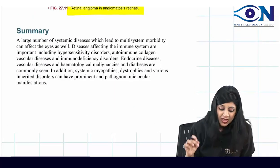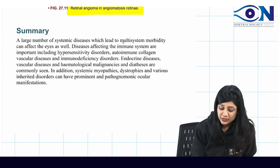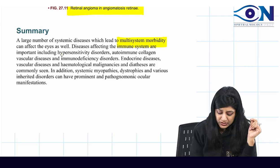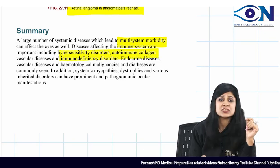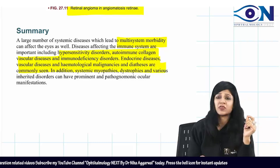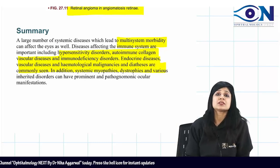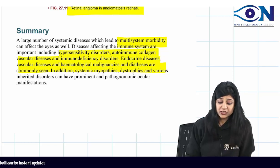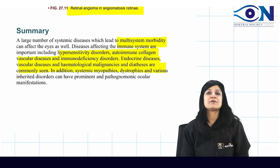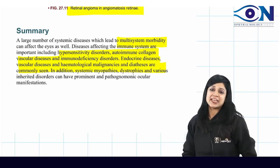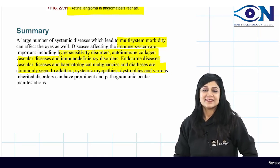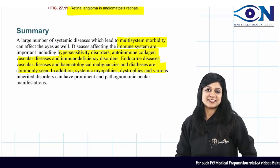Summary: A large number of systemic diseases lead to multisystem morbidity. Diseases affecting the immune system are important — including hypersensitivity reactions, autoimmune collagen disorders, immunodeficiency disorders, endocrine disorders, myopathies, arthropathies, dystrophies, and various inherited disorders — all giving prominent and pathognomonic ocular manifestations. Keep studying, keep shining. This chapter will definitely give you at least one exam question.